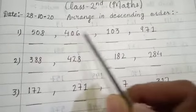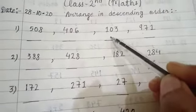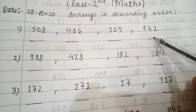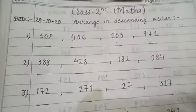Then we will look at the remaining numbers. Which number will be the biggest? 406, so here will be 406. And the last number, the smallest, is 103. This way, we have to arrange these numbers in descending order.